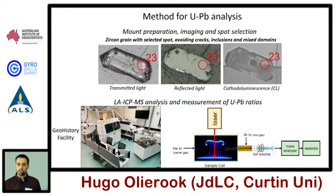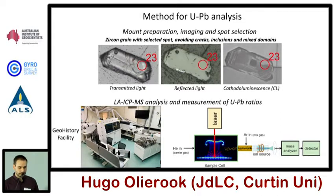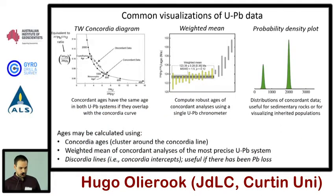Laser ablation is probably the most efficient technique out there, but you need a slightly larger spot size and it has a deeper penetration depth. So if you're interested in something a bit more fine-scale, you might want to go to SHRIMP; if you want something even smaller, you're going to TIMS — but there's a trade-off in time efficiency. Just before I get into results, let me explain how we visualize this data.